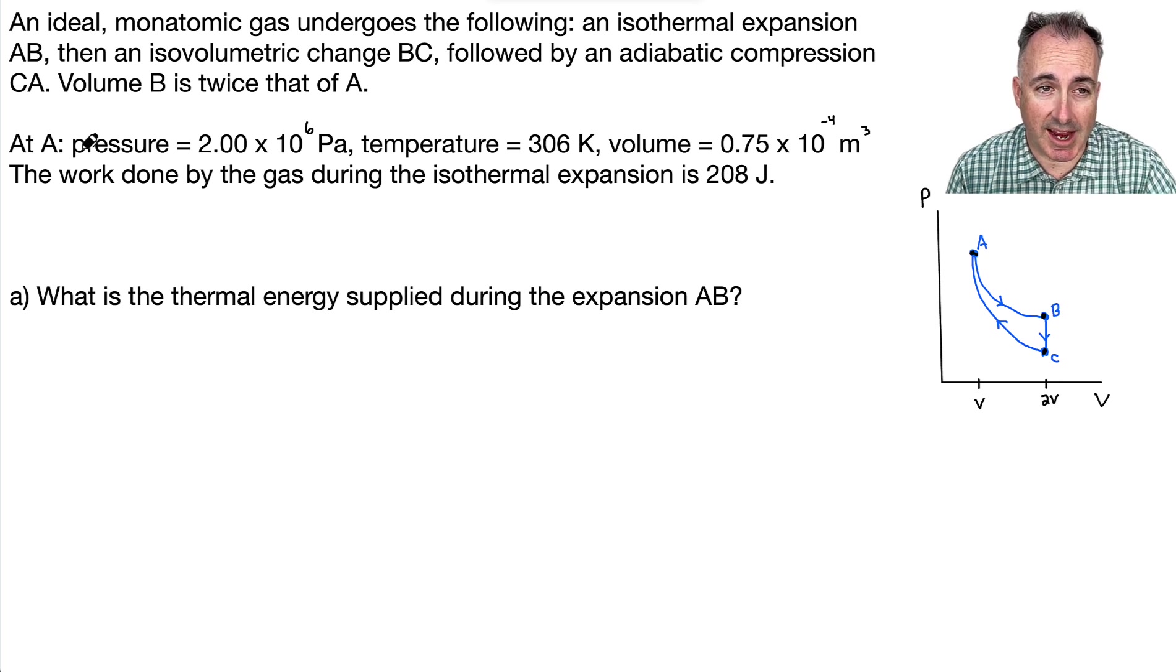And we're told this piece of information that volume B is twice that of A. You can see that from here, that this one here is C. This one here is 2V right there. And this one here is just V. So whatever V is, B is twice that. We know the pressure, the temperature, and the volume at A. And we're told also that the work done by the gas during the isothermal expansion is 208.